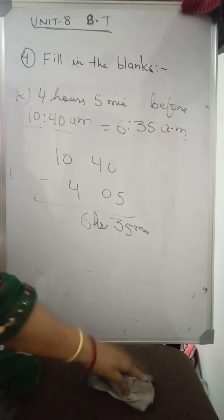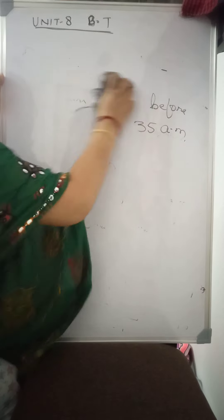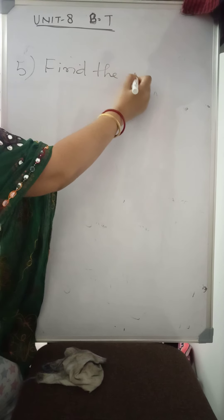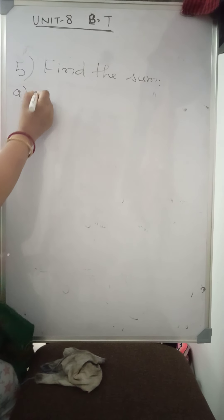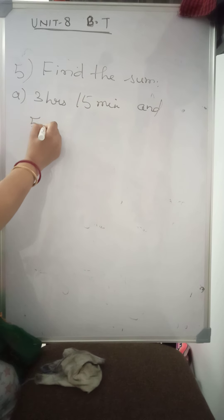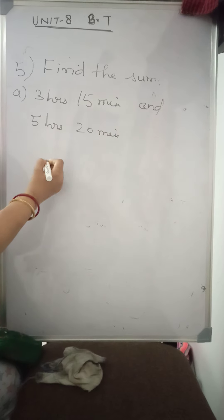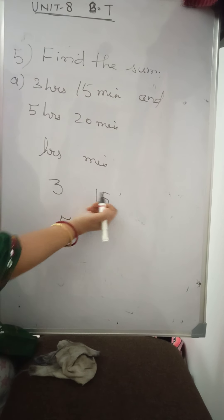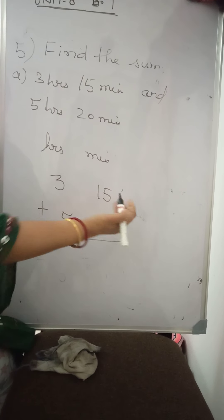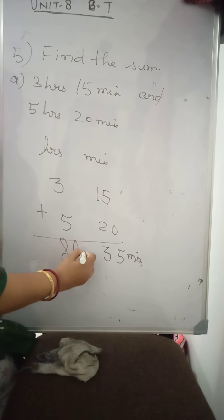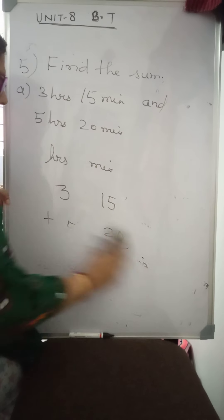Question No. 4 is completed. Now question No. 5: find the sum. A: Three hours fifteen minutes and five hours twenty minutes. Make a column of hours and minutes. Add from the right — fifteen plus twenty is thirty-five minutes, three plus five is eight hours. So the answer is eight hours thirty-five minutes.